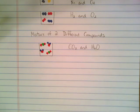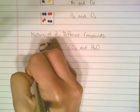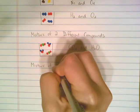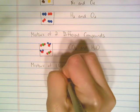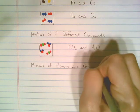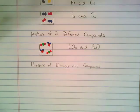The last type of mixture you might see is a mixture of an element with a compound. An example of that might be,